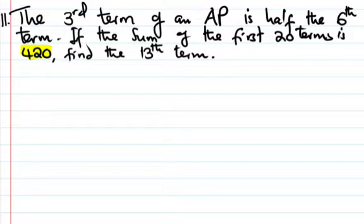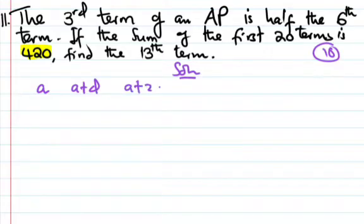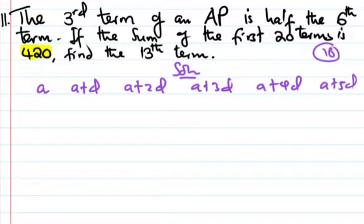So this one is simple. In an AP, the first term is denoted by A. Second term, you have A plus D. Then A plus 2D, A plus 3D, A plus 4D, A plus 5D, and so on and so forth.